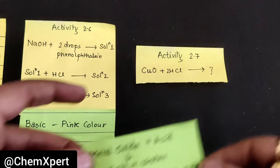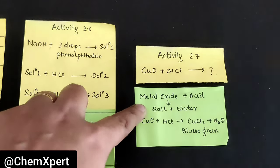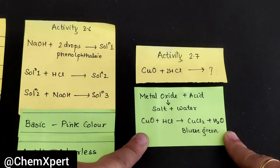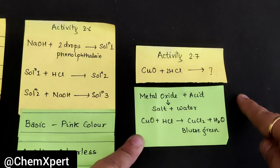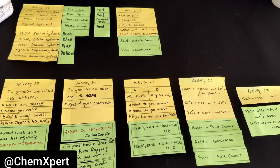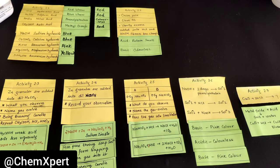Activity 2.7 involves copper oxide mixed with HCl — copper oxide is a metal oxide that reacts with acid to form salt and water. In Chapter 2 there are almost 15 activities and we have covered all seven activities here. These observations are very important as questions are now framed as case-based questions. Kindly learn the observations and write them in table form in your copy. Thank you everyone.